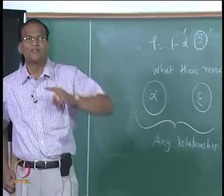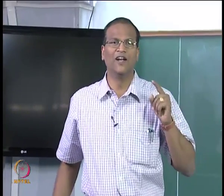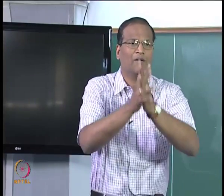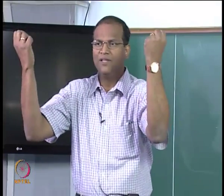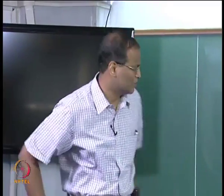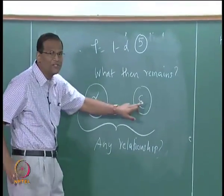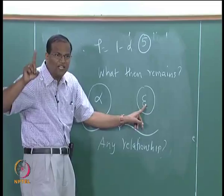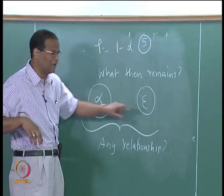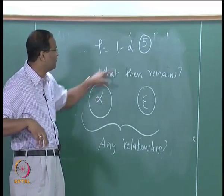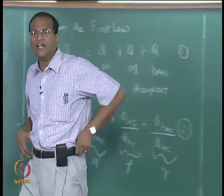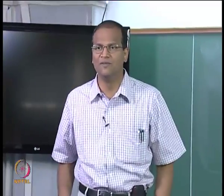The best minds were also preoccupied with the question of whether emissivity and absorptivity are related to each other — for convenience. Suppose I can establish a relationship between alpha and emissivity: if I measure emissivity and know the relationship, I can get alpha, and from alpha get rho, and for an opaque surface tau is zero. Therefore, with just the knowledge of emissivity, I have all the properties required for carrying out radiative transfer analysis.